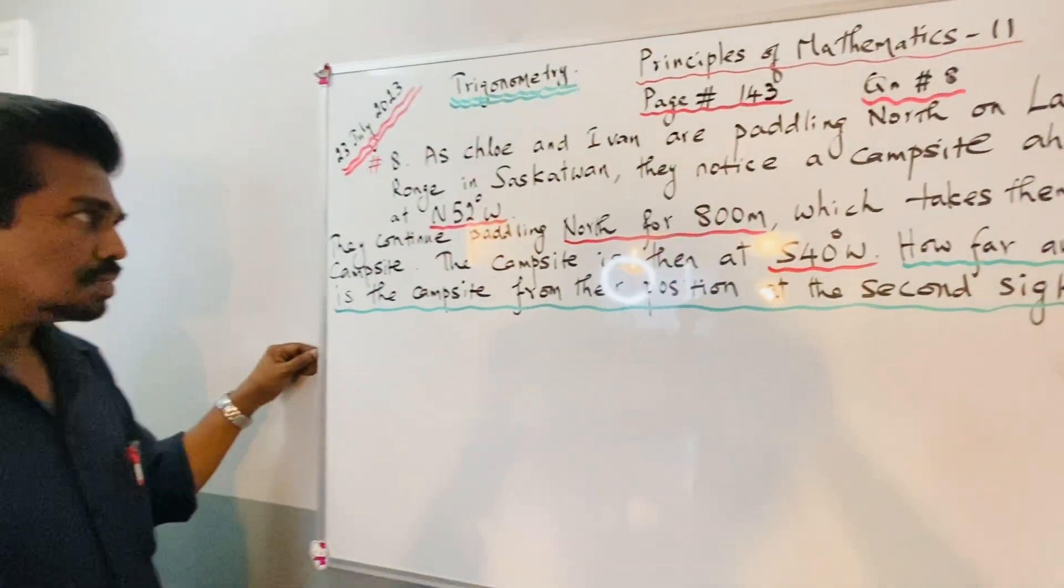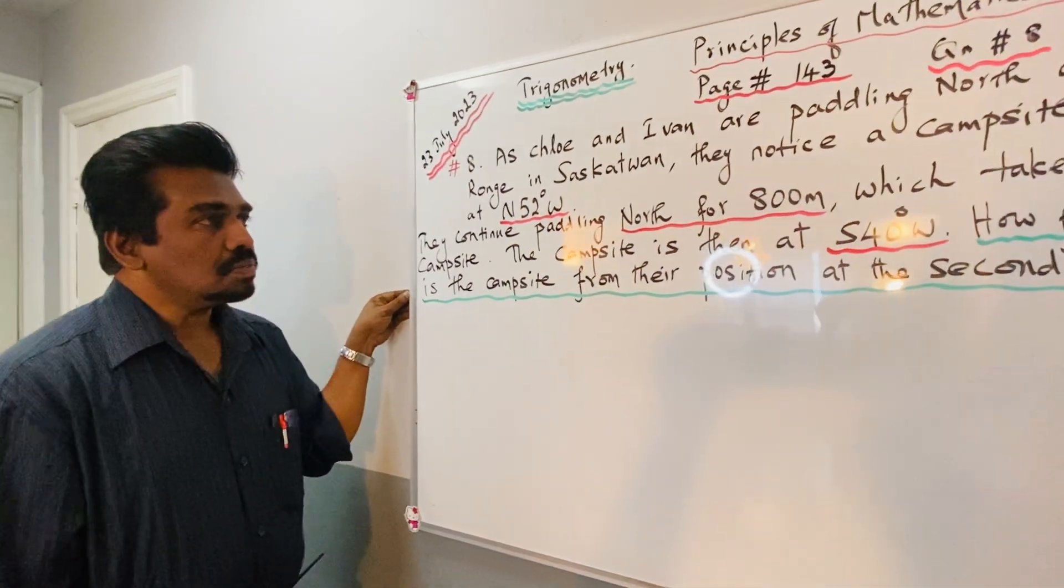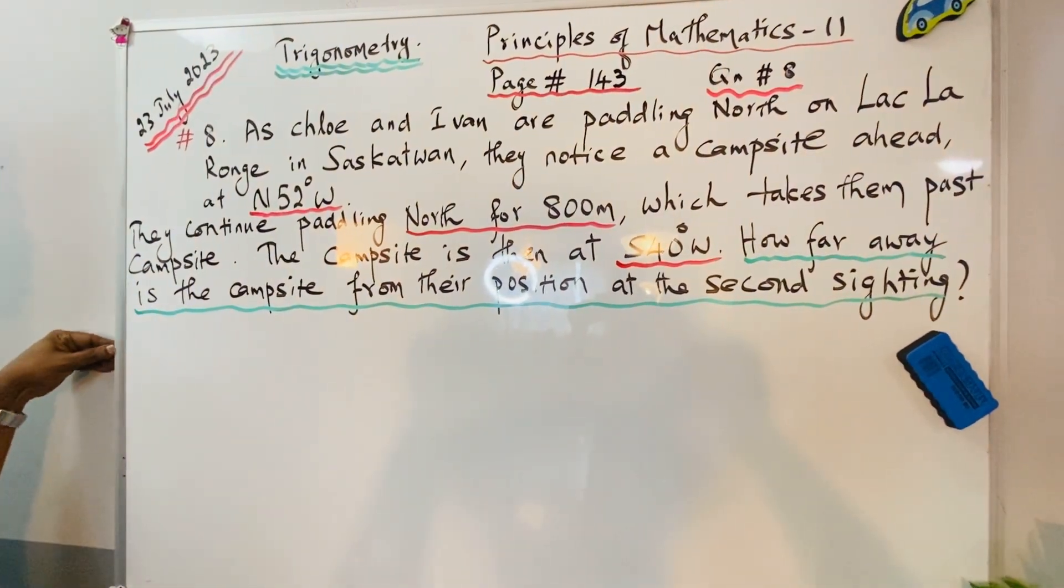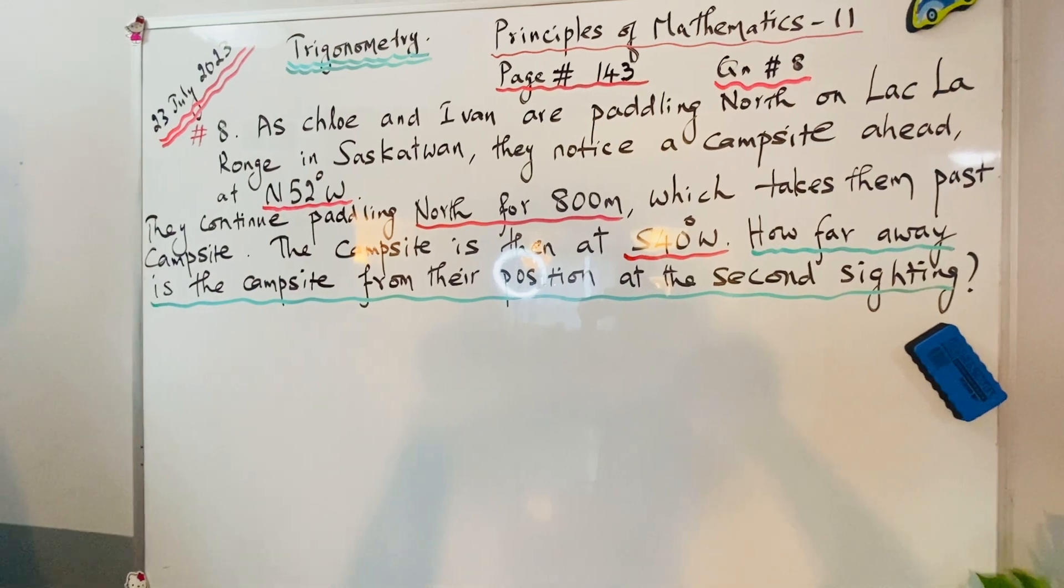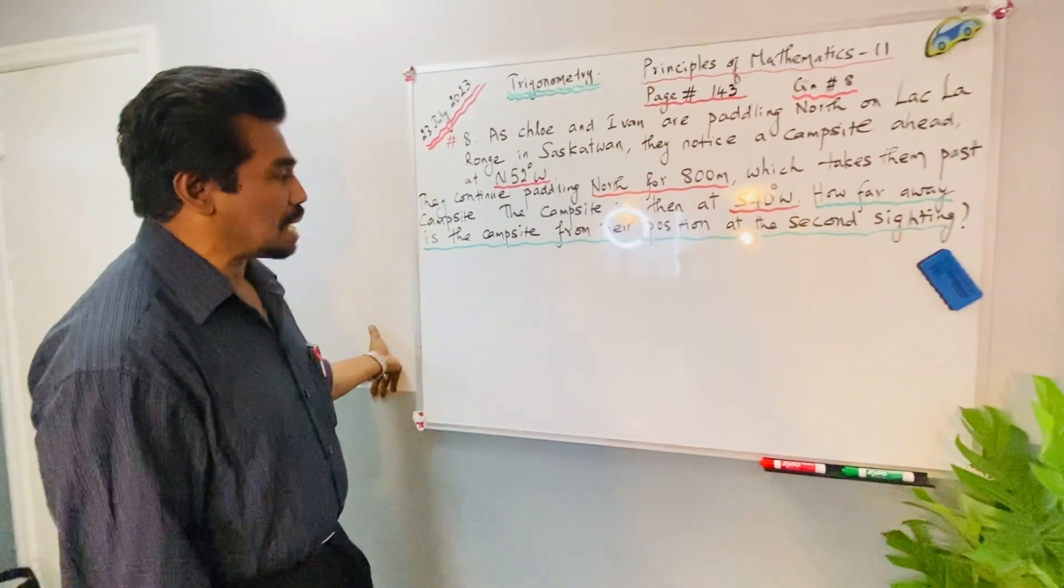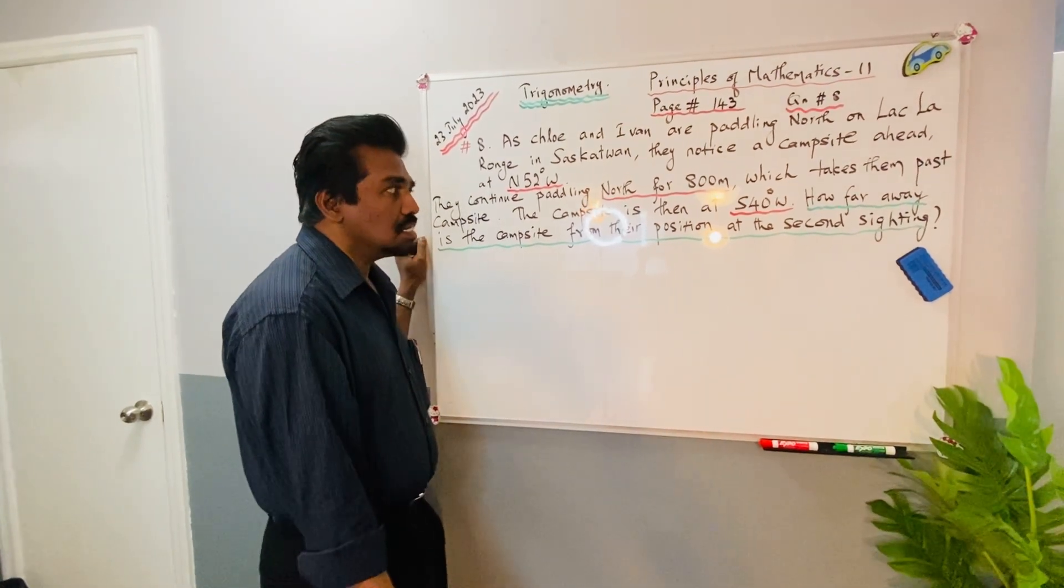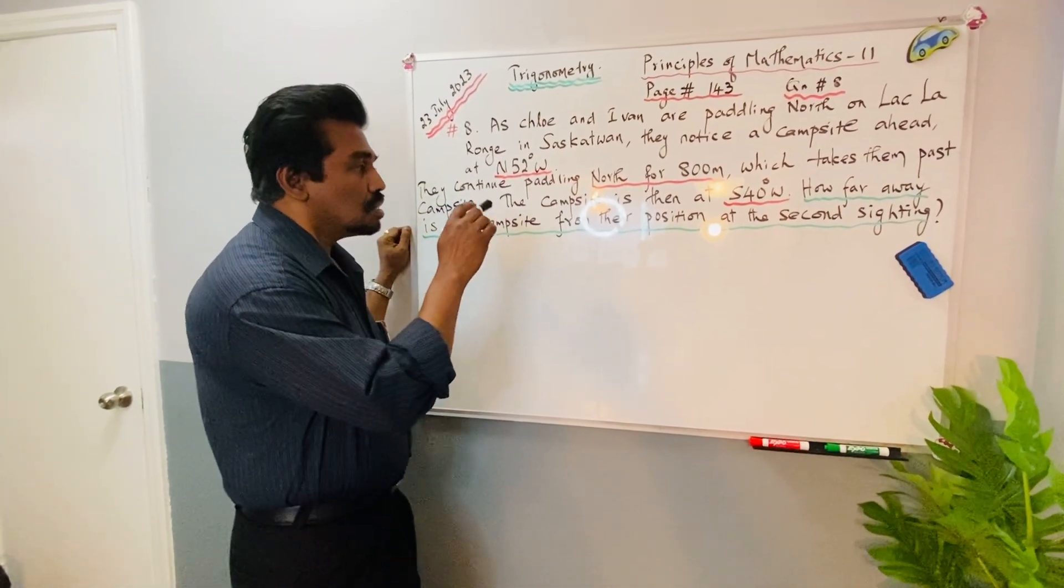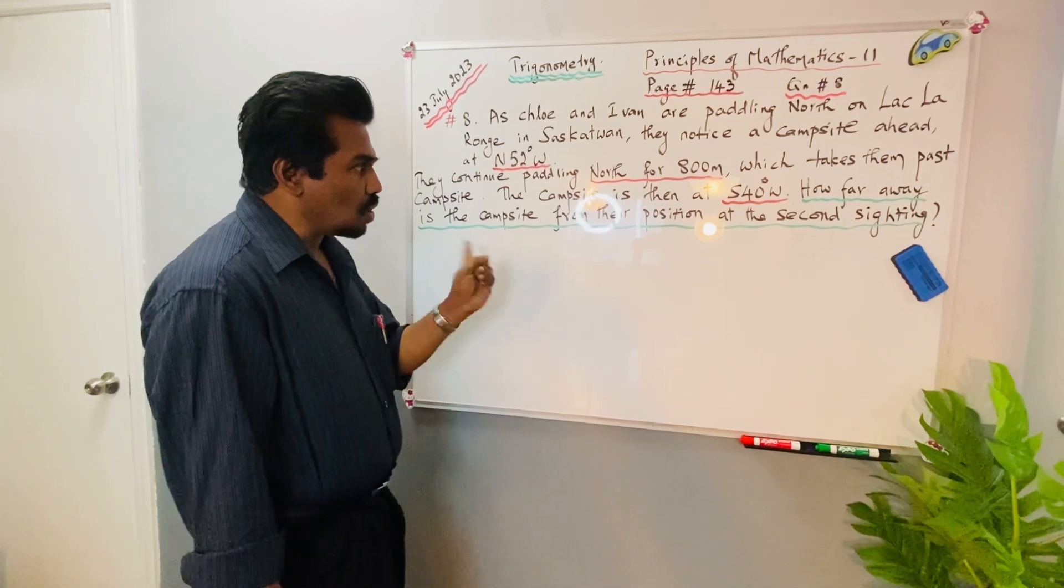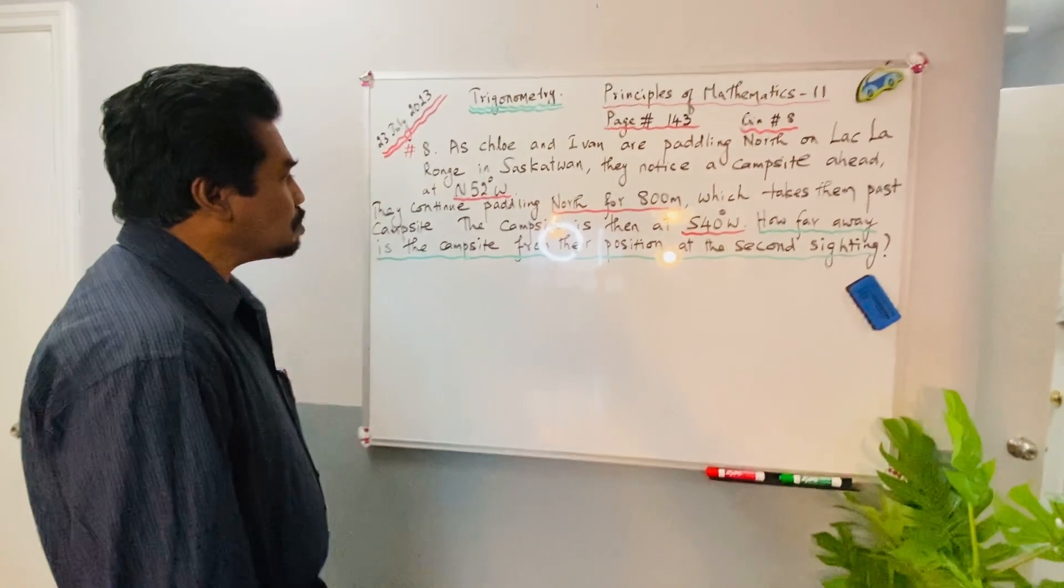Saskatchewan is a city in Canada. They continue paddling north for 800 meters, which takes them past the campsite. The campsite is then at 40 degrees south of west. The question is: how far away is the campsite from their position at the second sighting?